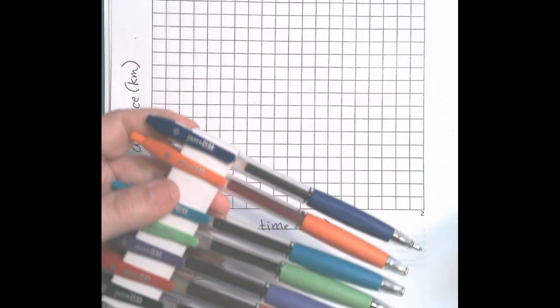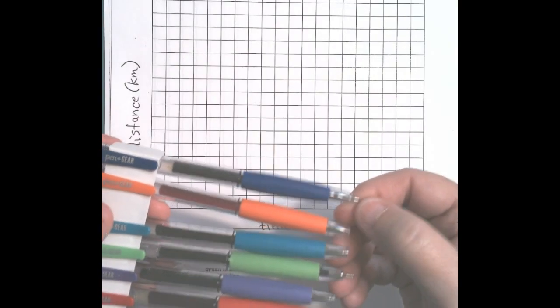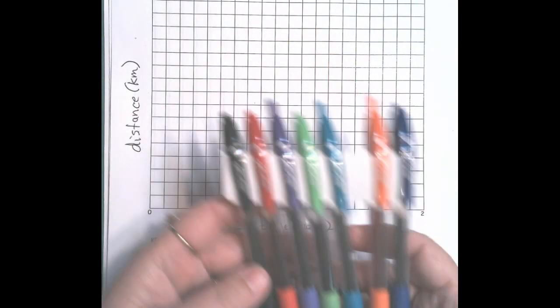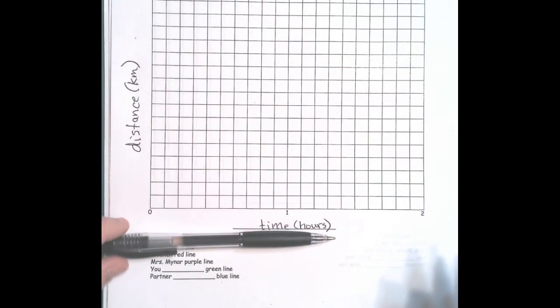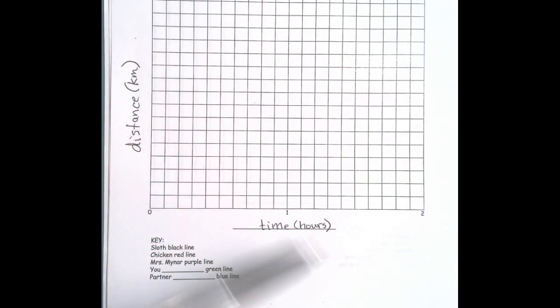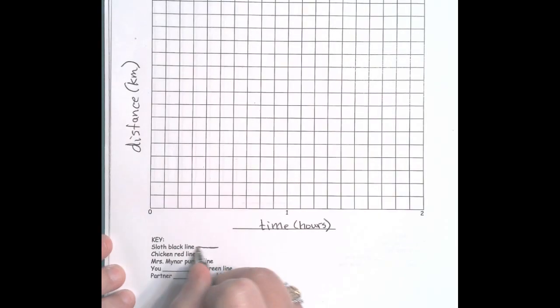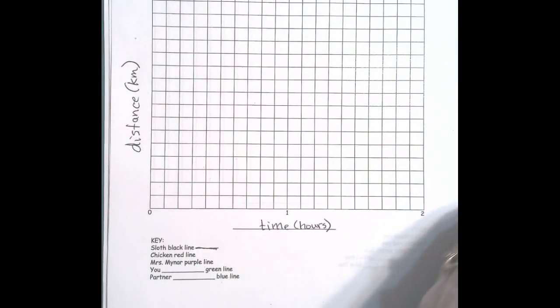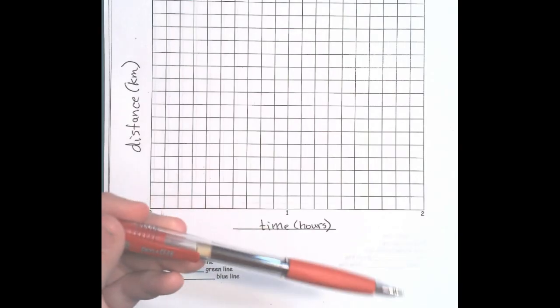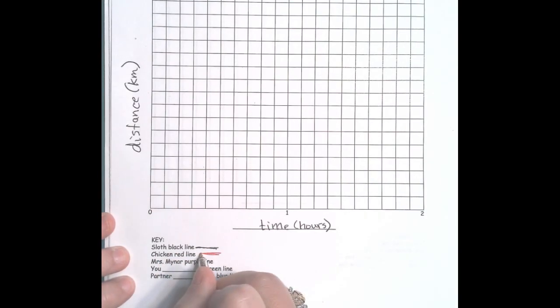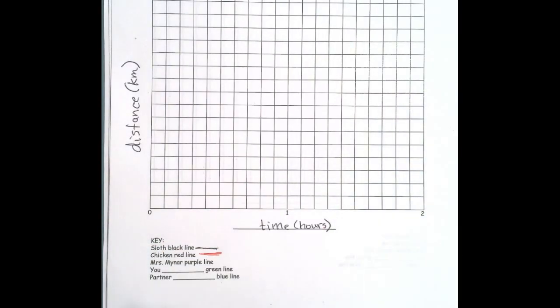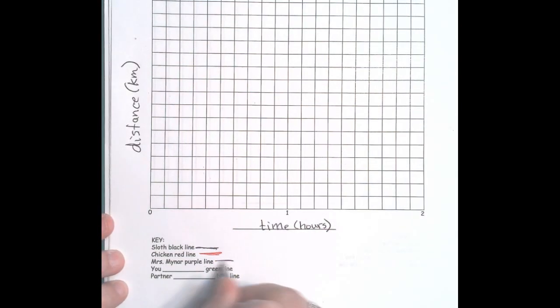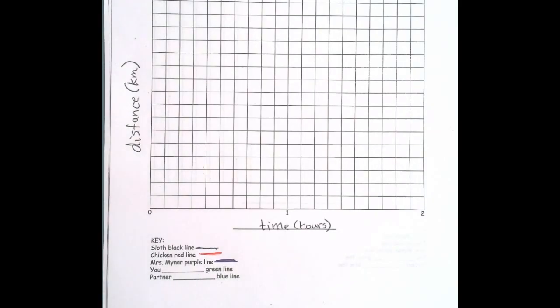You're going to have to take the little plastic things off of them before you use them. We're going to use black to represent the sloth, and you may just want to give a little color there. We're going to use red, not pink, to represent the chicken. If you struggle with color blindness, ask someone to help you out with the colors. We have purple, Miss Minor's favorite color, to represent Miss Minor.